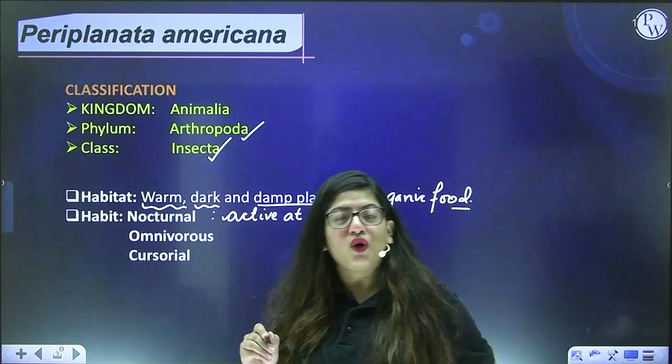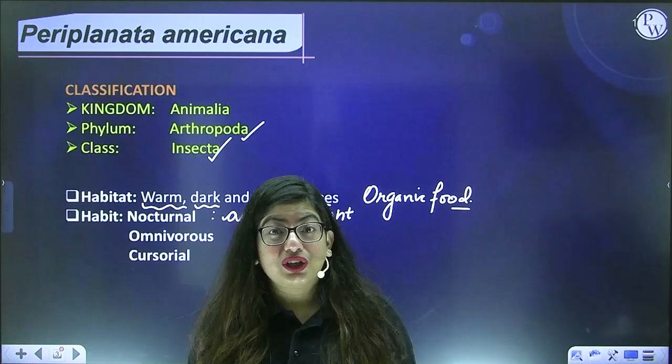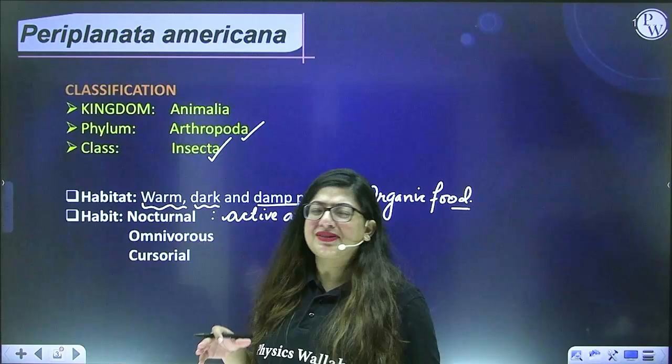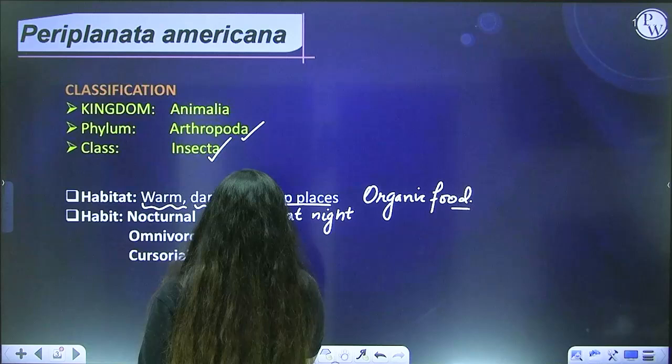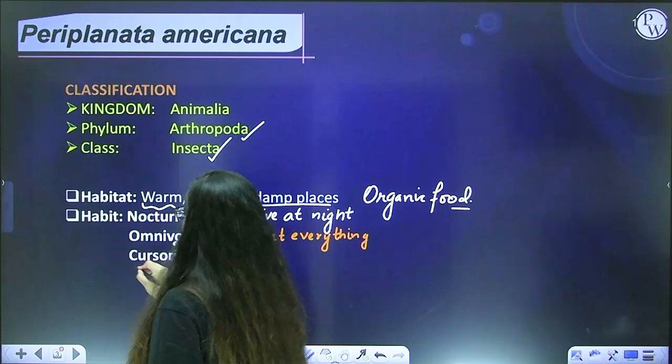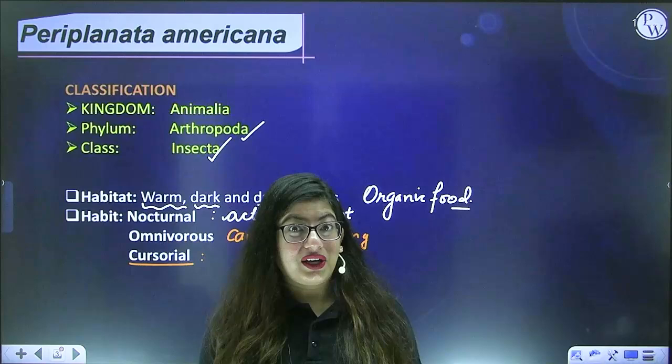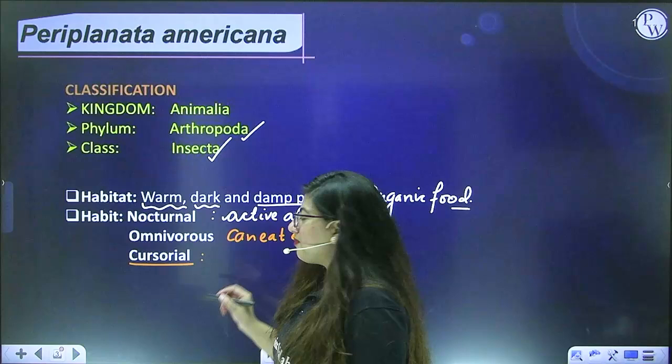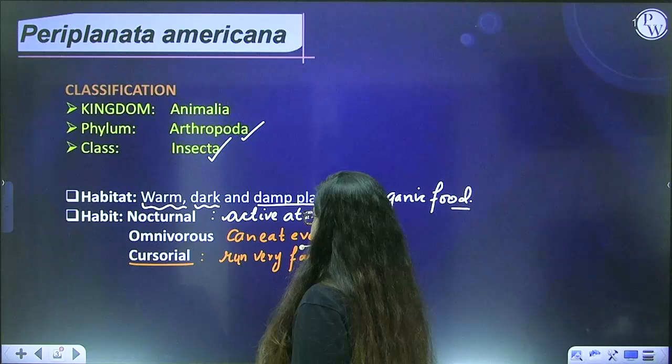Cockroaches are also omnivorous — they can eat almost everything, including your clothes and leather, both vegetarian and non-vegetarian food. They are also cursorial, meaning they run very fast. Whenever they detect someone coming, they will just run away very quickly. This is a kind of adaptation they have developed over time.